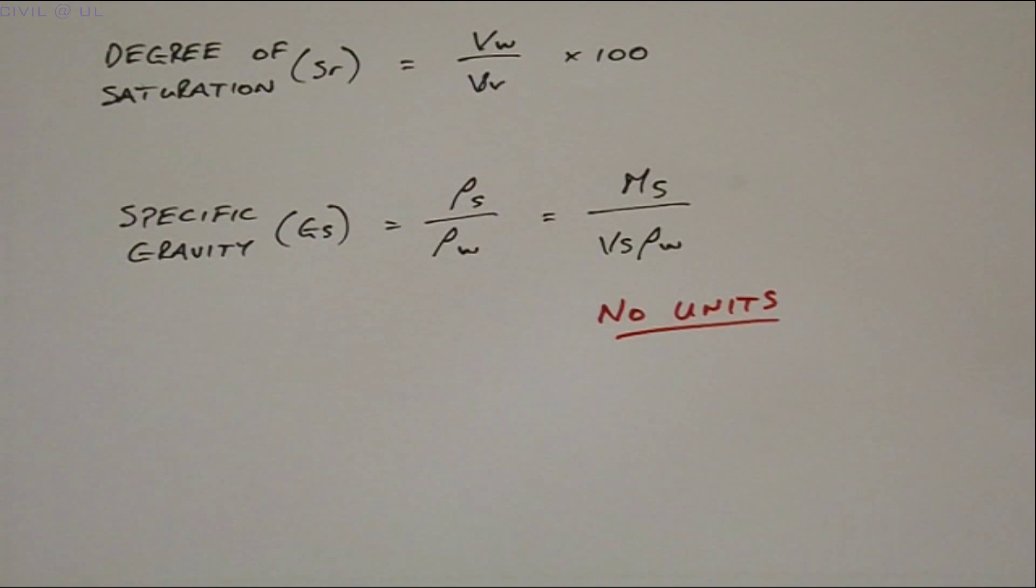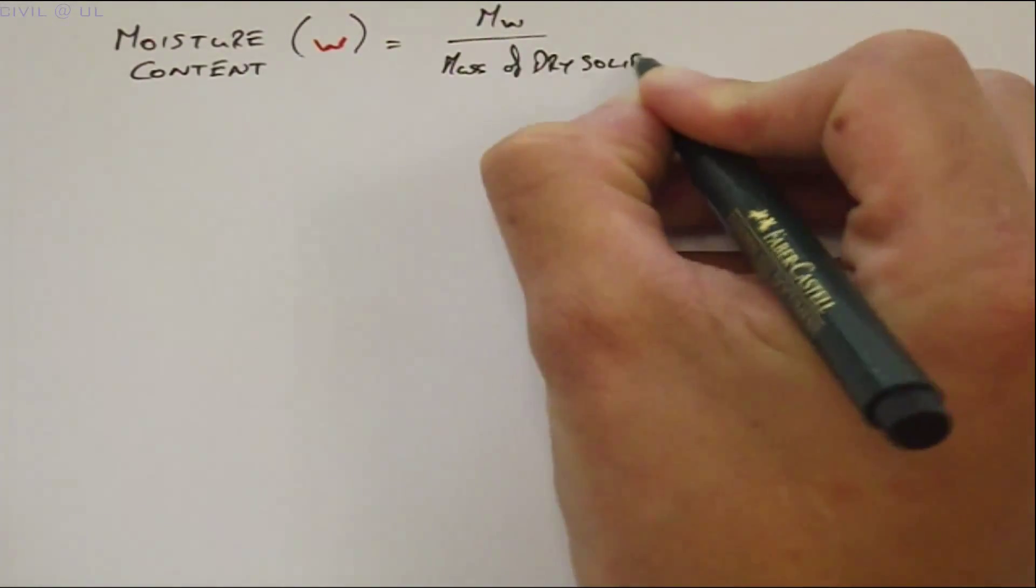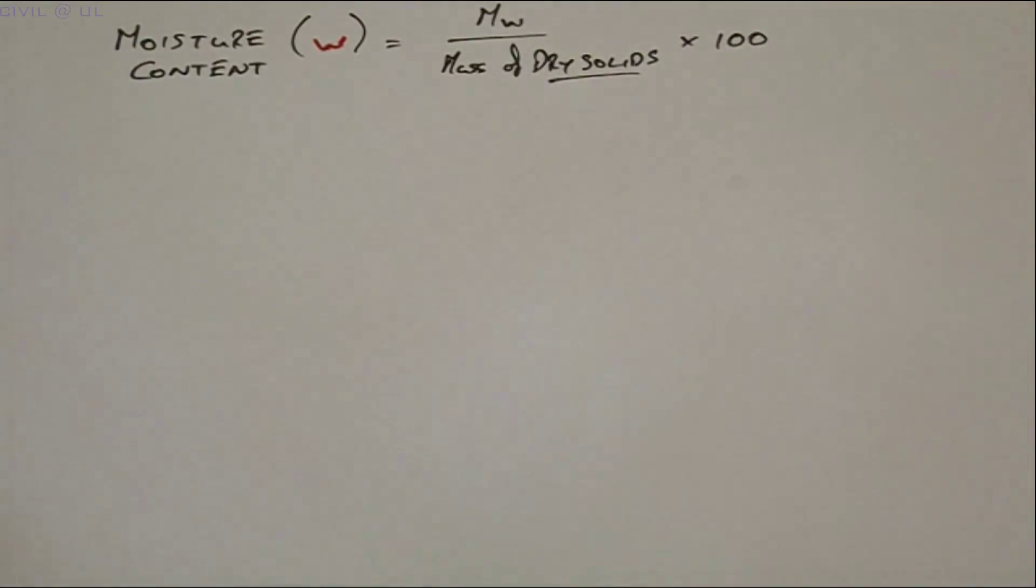Let's gather these five definitions together and highlight them in our notes. We will use them many times in the course of our studies and beyond. Moisture content is equal to the mass of water divided by the mass of solids, expressed as a percentage.